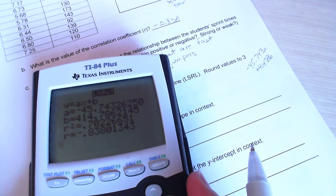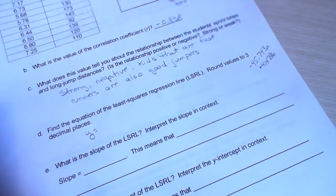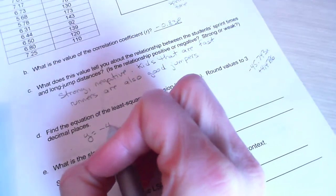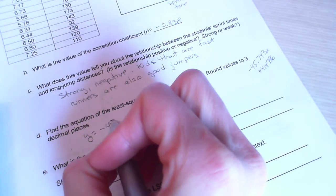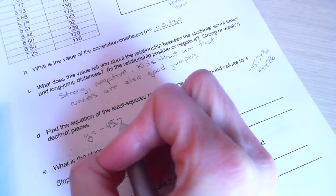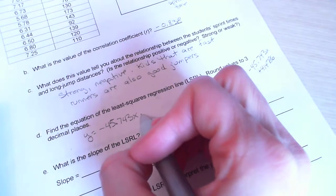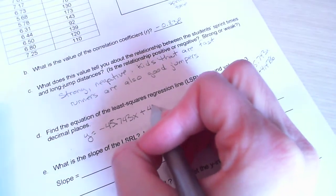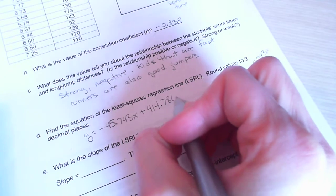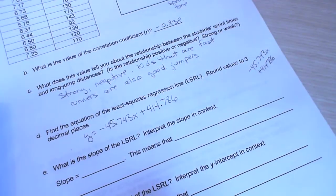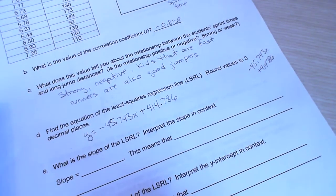So the equation of my line is negative 45.743x, so that's my slope, plus my y-intercept is 414.786. So that is the equation of my line. Three decimal places, please.